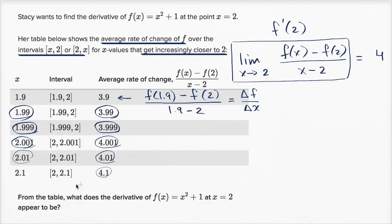From the table, what does the derivative of f(x) = x² + 1 at x = 2 appear to be? Well, the derivative at x = 2 appears to be equal to 4. And we're done.